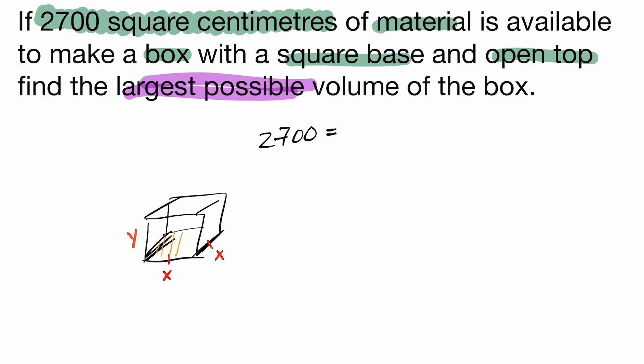Well, the base here will be X times X. That'll give me X squared. And one of these sides is going to be X times Y. And there's four of these. So this would be plus 4XY. So now I have a representation of my constraint here, the total surface area being a function of these X and Y values.